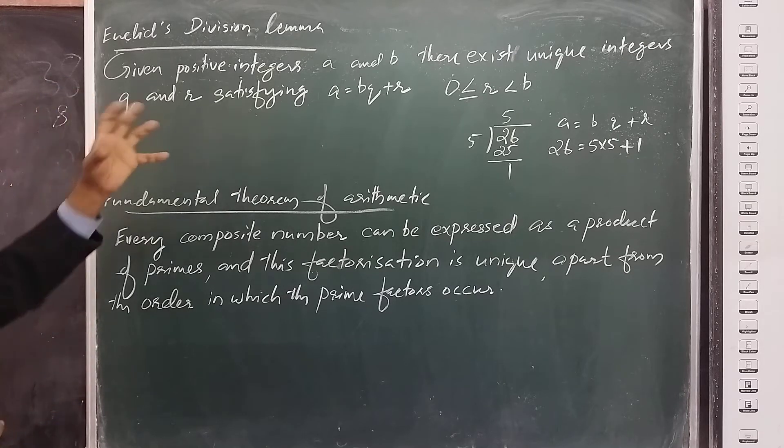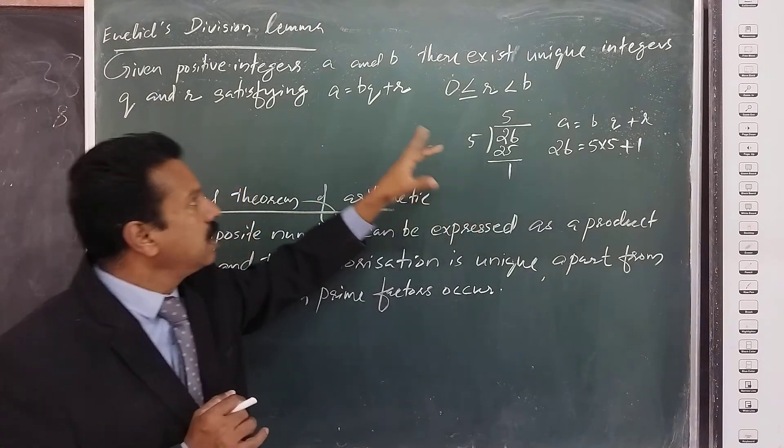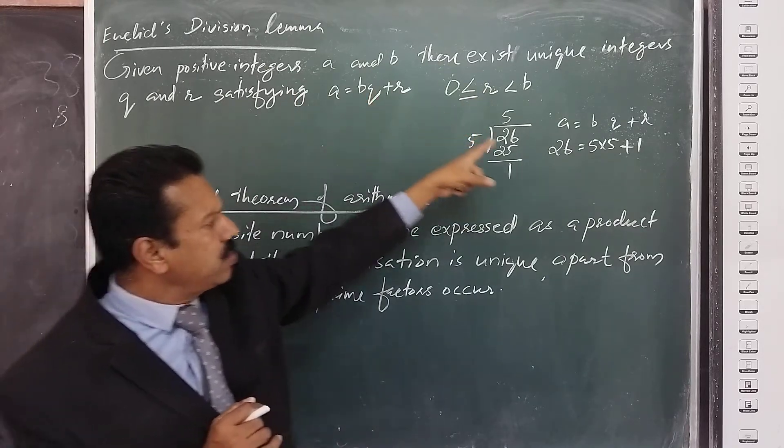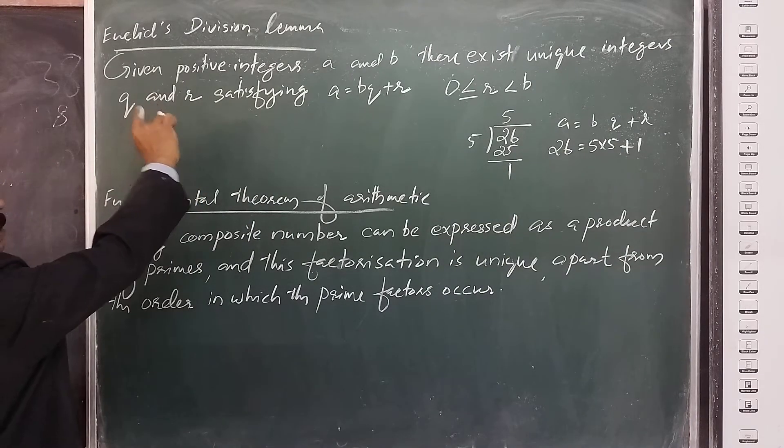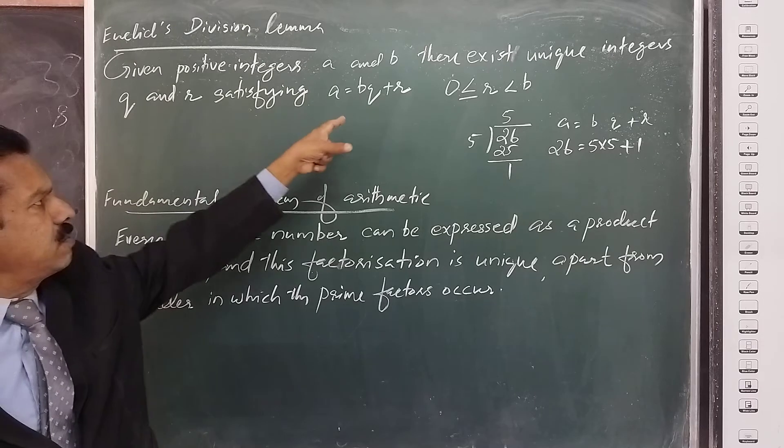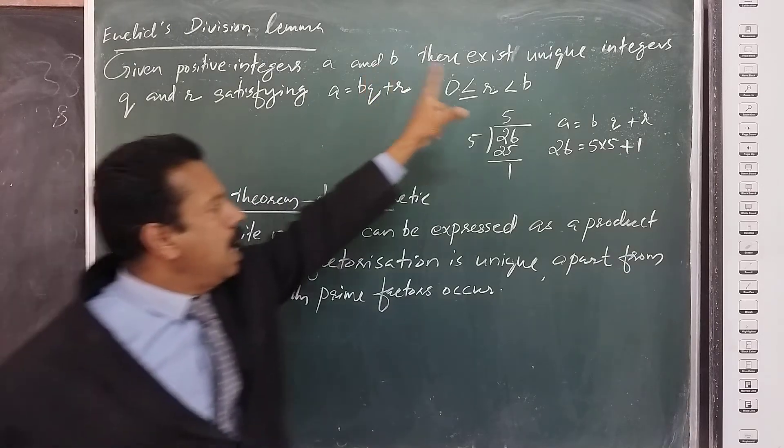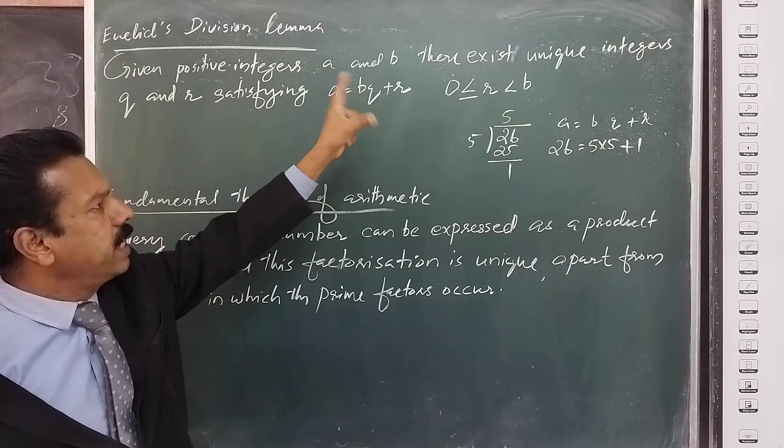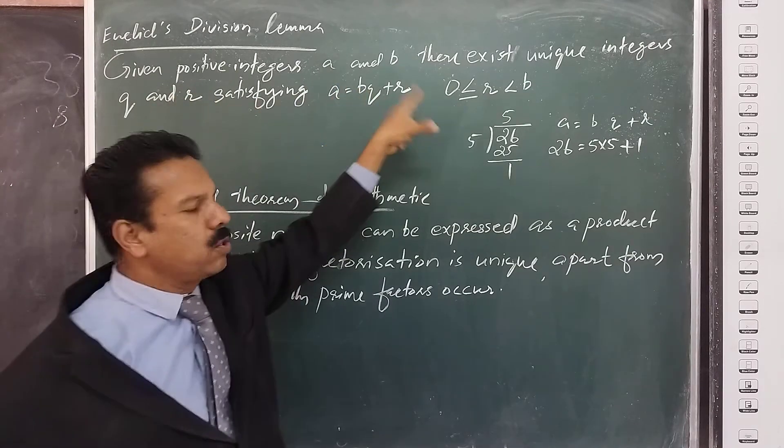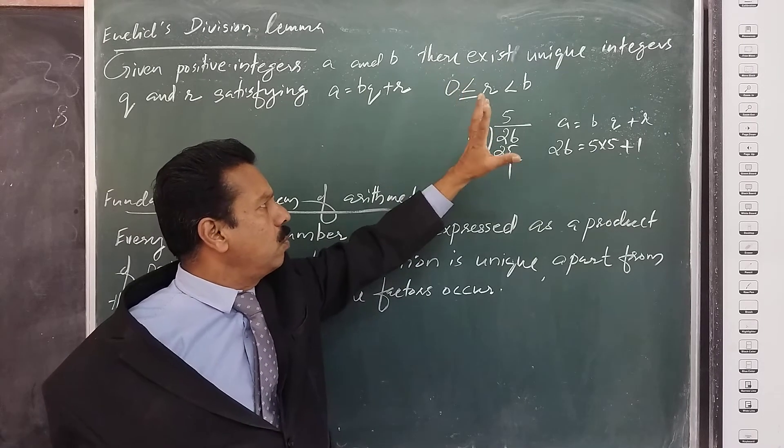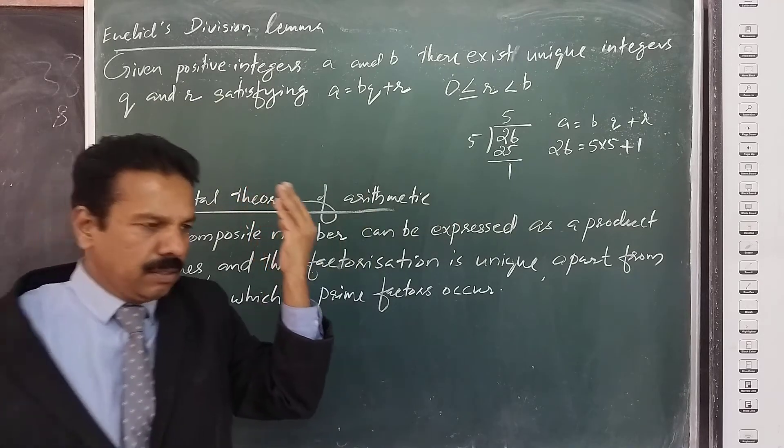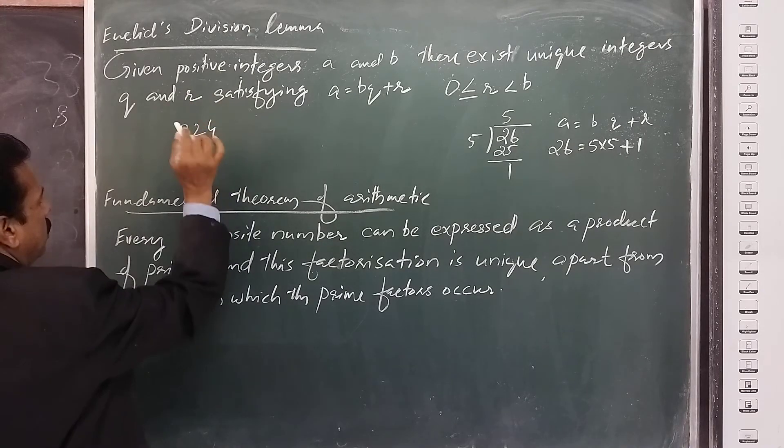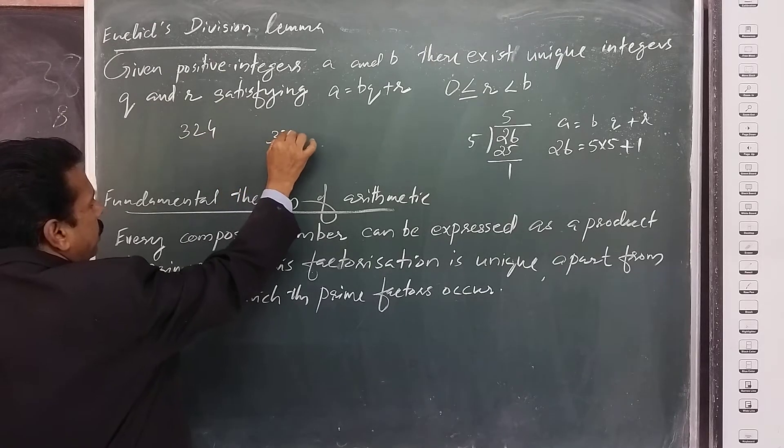Given positive integers a and b, there exist unique integers q and r satisfying a is equal to bq plus r, where r is greater than or equal to 0 and less than b. I will read once again: given positive integers a and b, there exist unique integers q and r satisfying a equals bq plus r, r greater than or equal to 0, less than b.